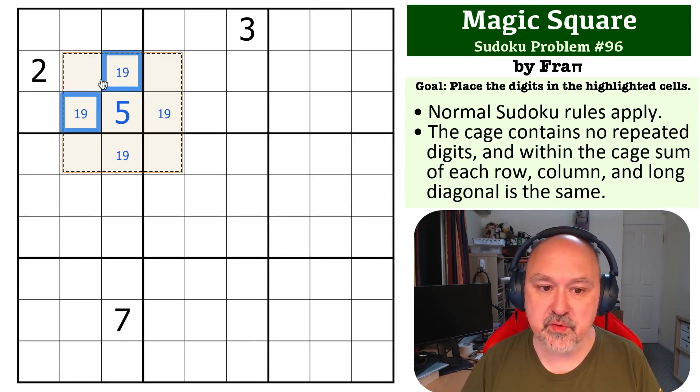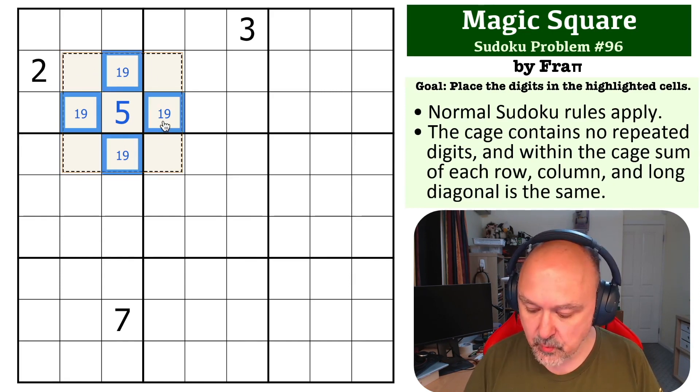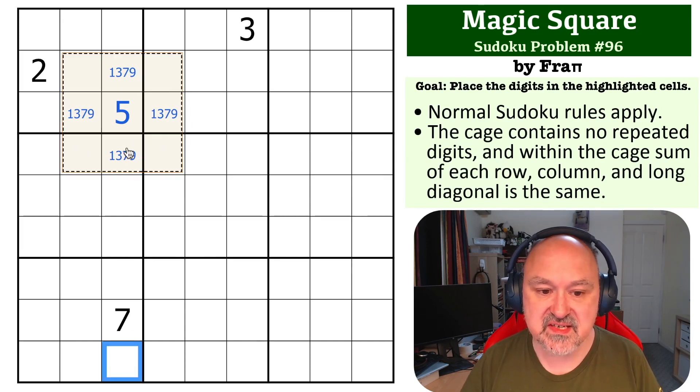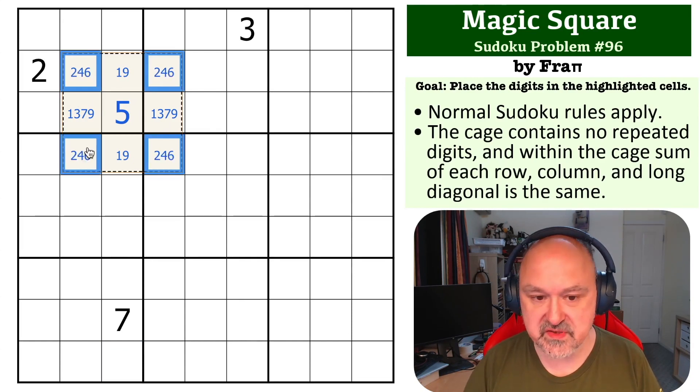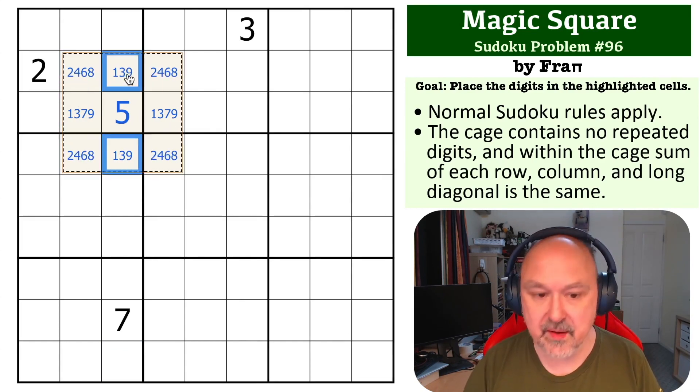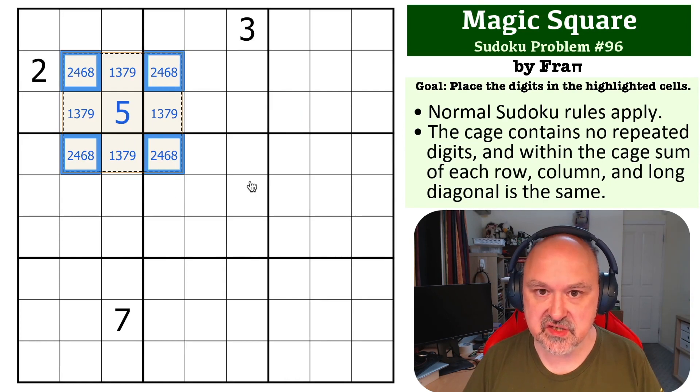So what we end up with is one, nine here, and the three, seven, because of the one, nine, cannot go in the corners. So these become one, nine and three, seven. The seven here eliminates the three, seven, and because it's one, nine, three, seven, these immediately become two, four, six, eight. So what we end up with, with any magic square, is five in the middle, the odd digits orthogonally adjacent to the five, and the even digits diagonal.